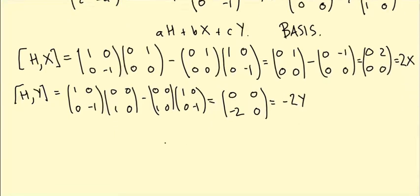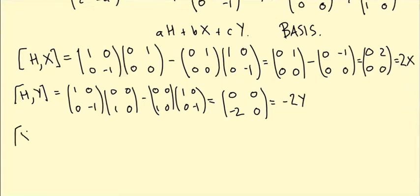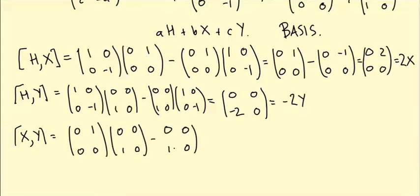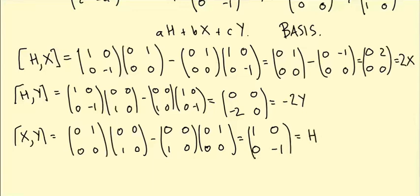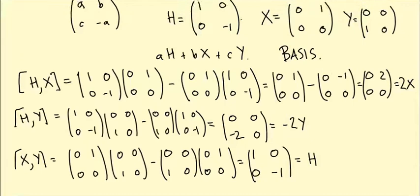What else can I do? I could do X and Y bracket together. X bracket Y. That's (0, 1, 0, 0) times (0, 0, 1, 0) minus (0, 0, 1, 0) times (0, 1, 0, 0). So that's going to be (1, 0, 0, -1). If you do that for yourselves, which is H in terms of my basis above, that's exactly this basis element H.